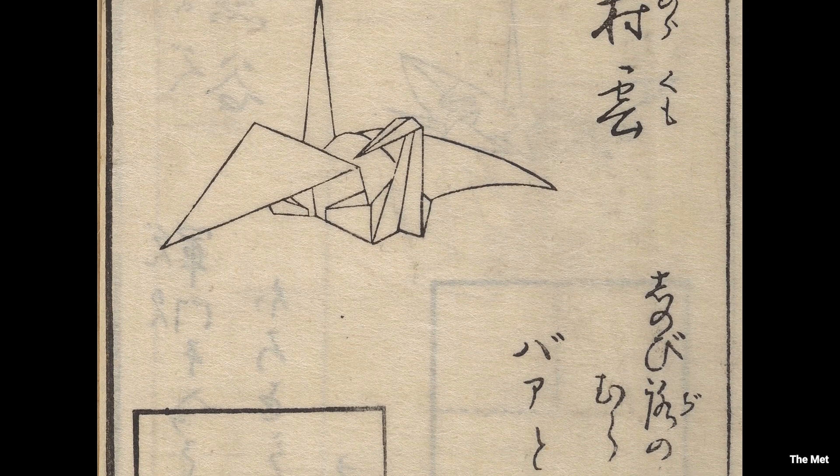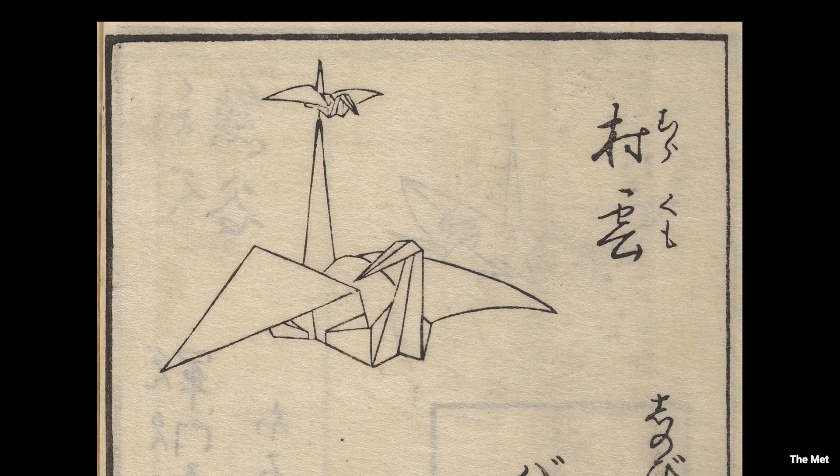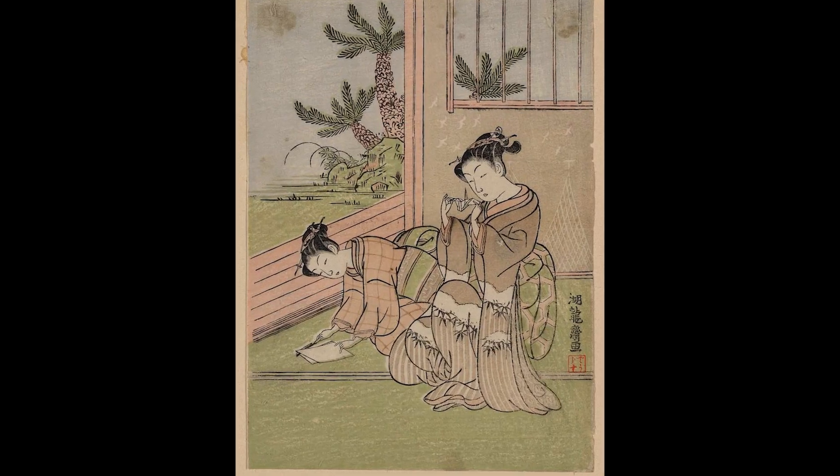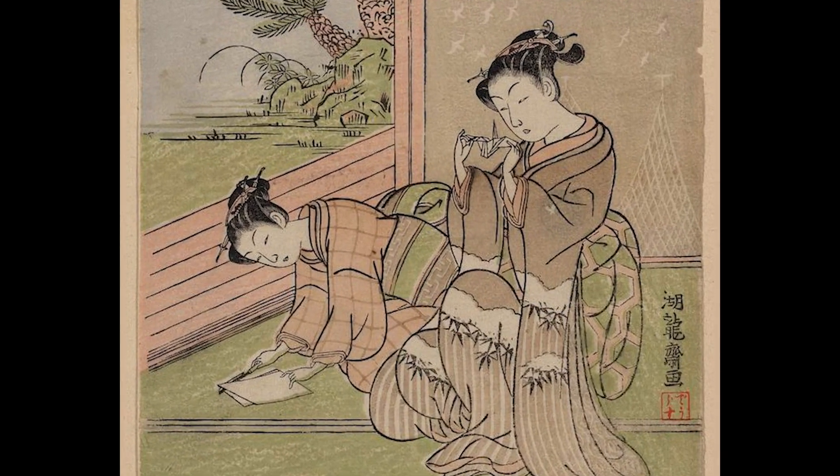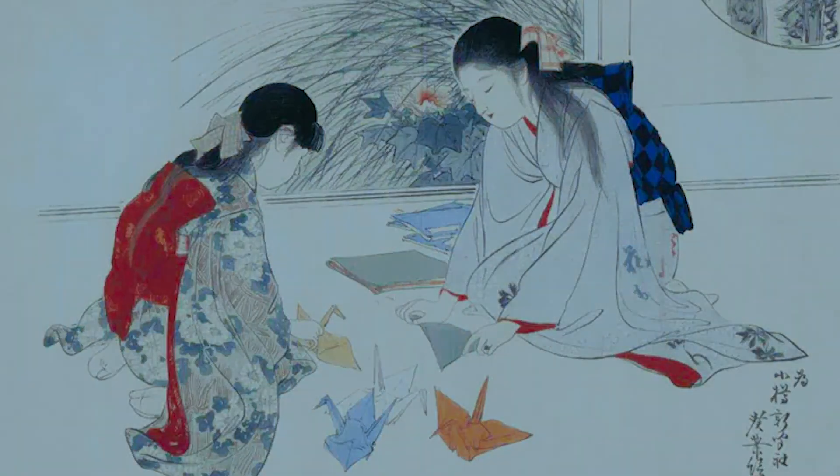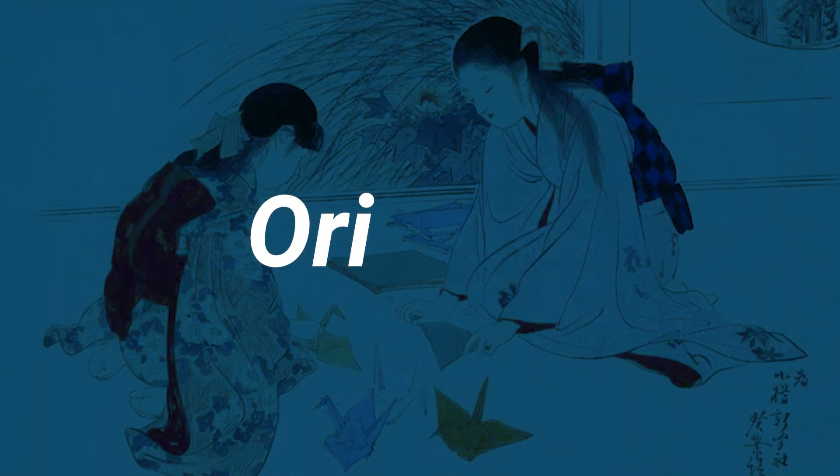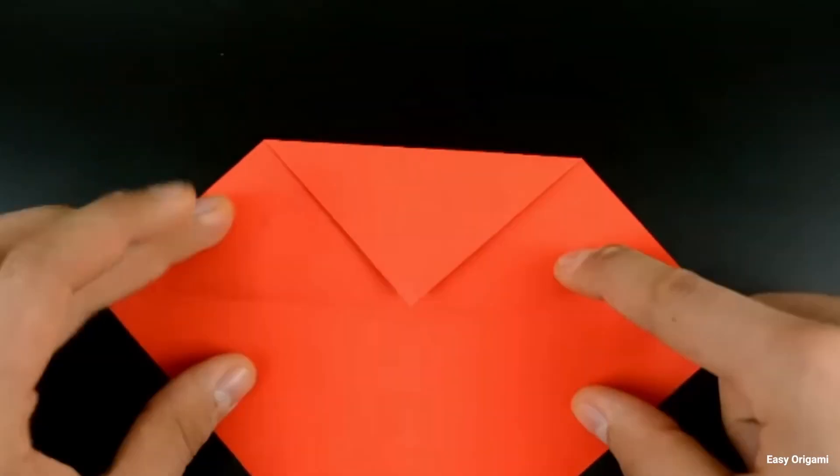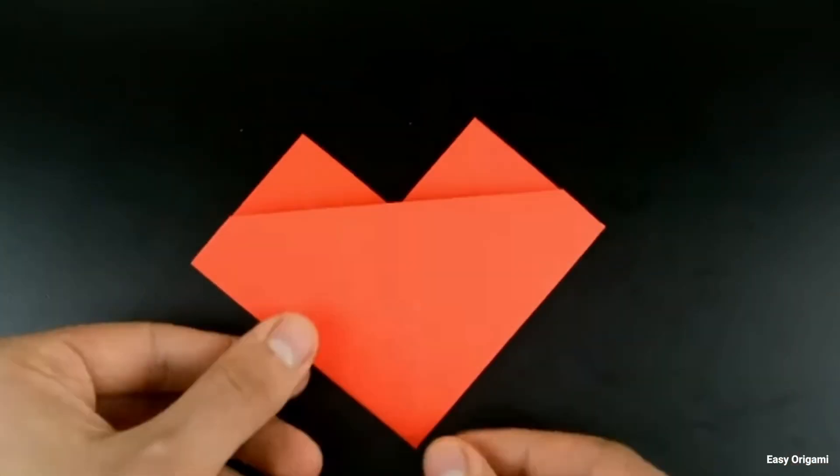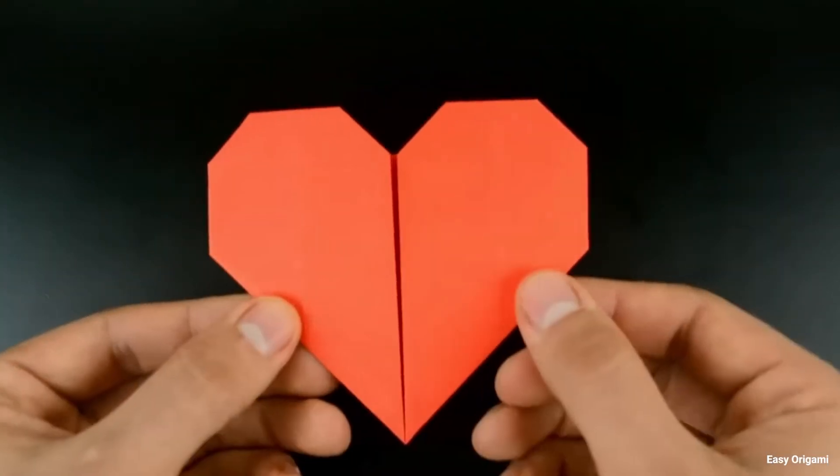Origami is an art form with ancient roots that has fascinated and inspired people for centuries. Originating in China and later perfected in Japan, the name origami is derived from the Japanese words Ori meaning folding and Kami meaning paper. It involves transforming a simple sheet of paper into intricate three-dimensional creations through a series of precise folds and creases.